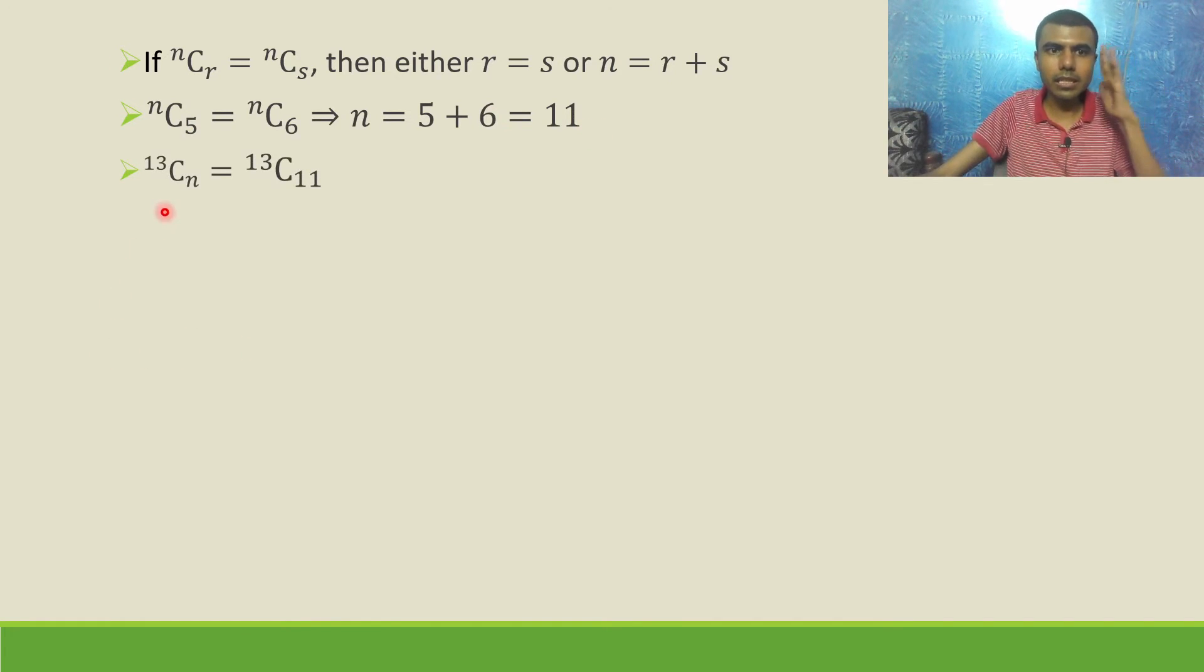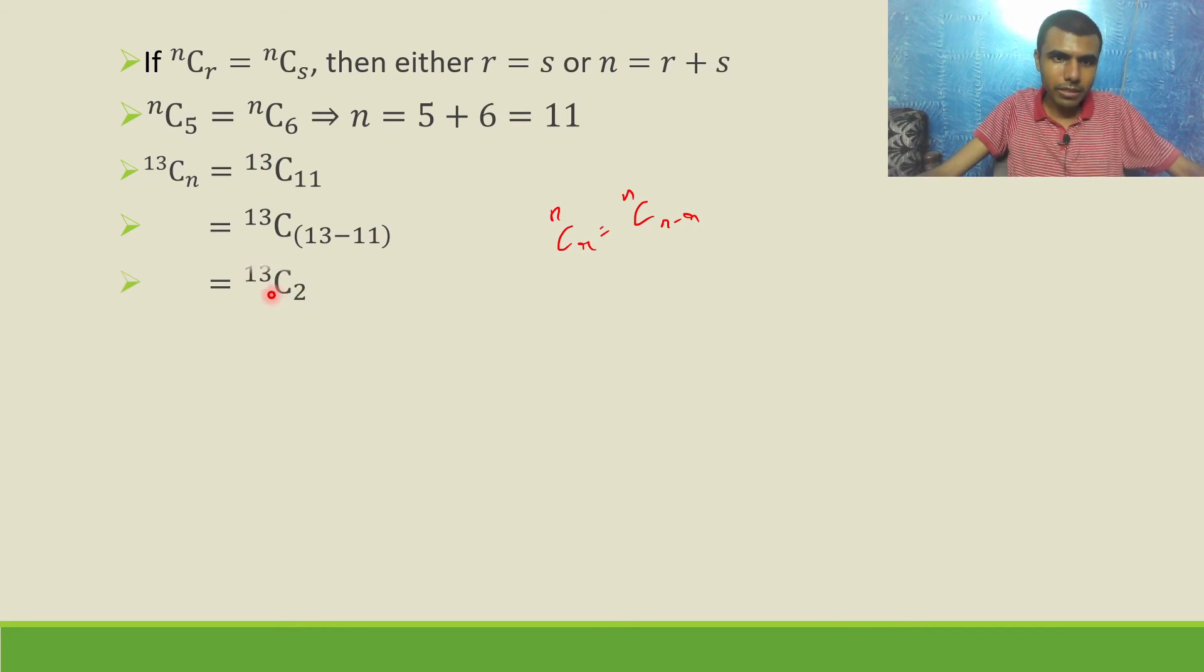Now, 13CN is nothing but 13C11. There is a property. What does it state? NCR is nothing but NC(N minus R). That means 13C11 is nothing but 13C(13 minus 11), which is nothing but 13C2.